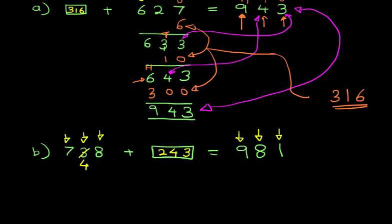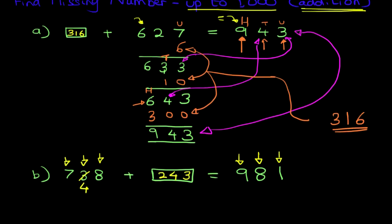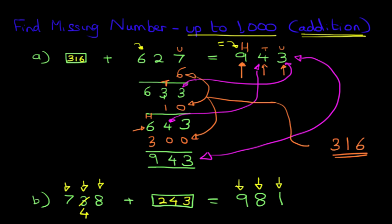I want you to develop speed on this. Accuracy and speed. Let's scroll back up again. Just to summarize, that is how we find the missing number for numbers up to 1,000 when we are looking at addition questions.